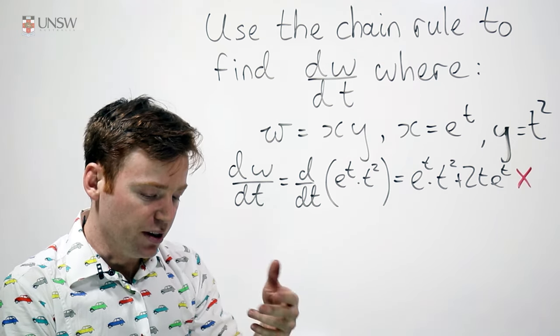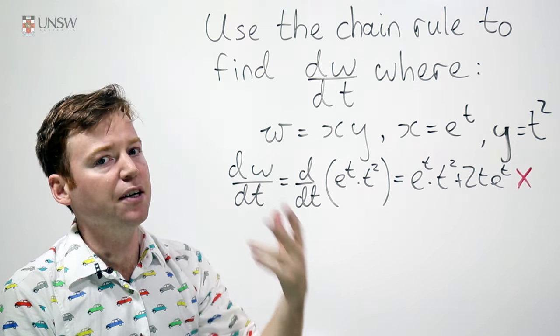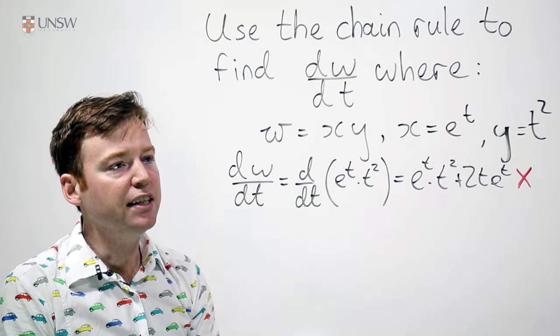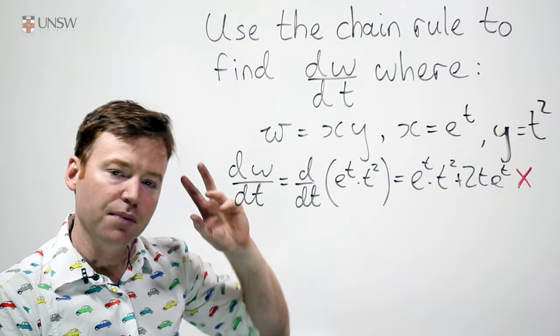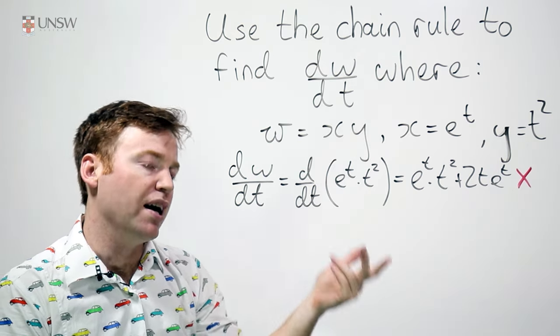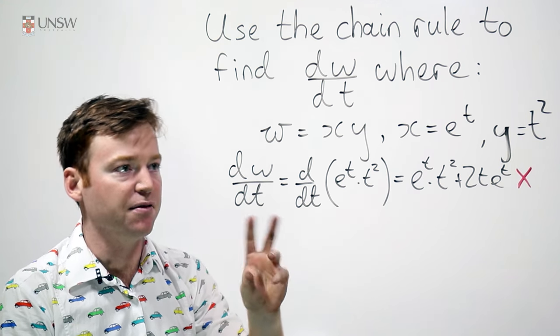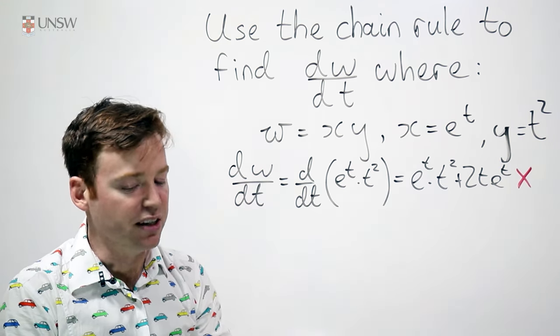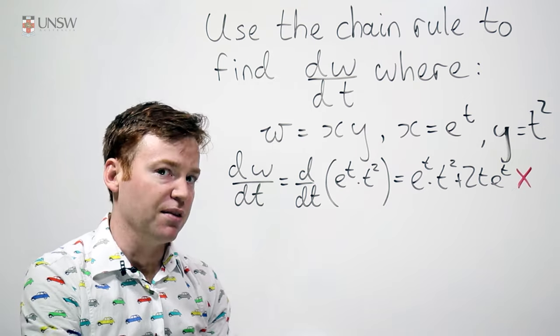Well, the chain rule is for evaluating derivatives of functions of functions. So what you really need to do is take w as a function of x and y. The x and y are themselves functions of t. So you have these intermediate variables x and y. And this is really the scenario where the chain rule comes into play.